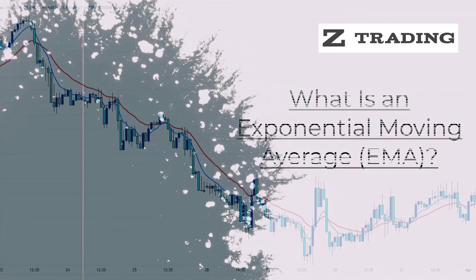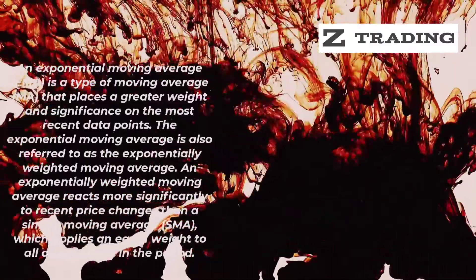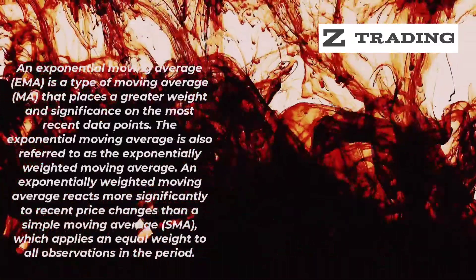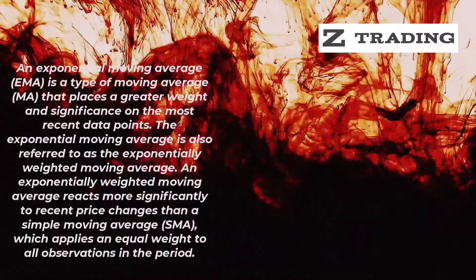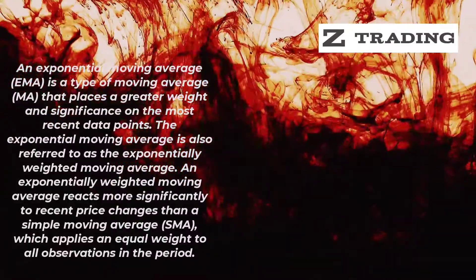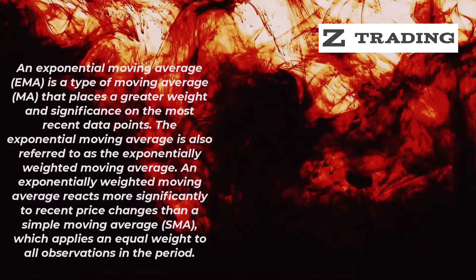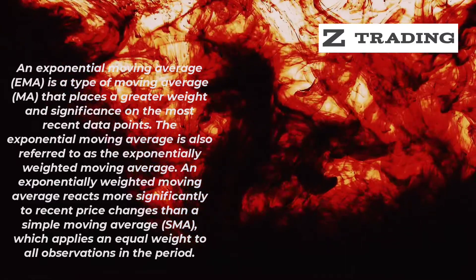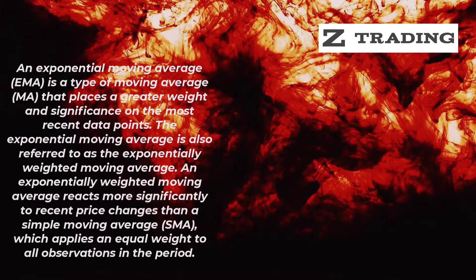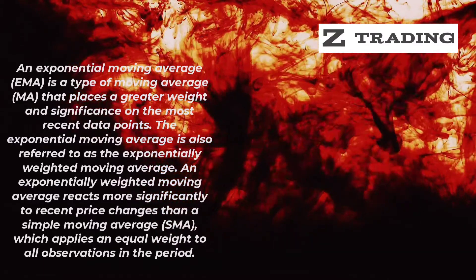EMA — An Exponential Moving Average is a type of moving average that places a greater weight and significance on the most recent data points. The Exponential Moving Average is also referred to as the Exponentially Weighted Moving Average. An Exponentially Weighted Moving Average reacts more significantly to recent price changes than the Simple Moving Average SMA, which applies an equal weight to all observations in the period.